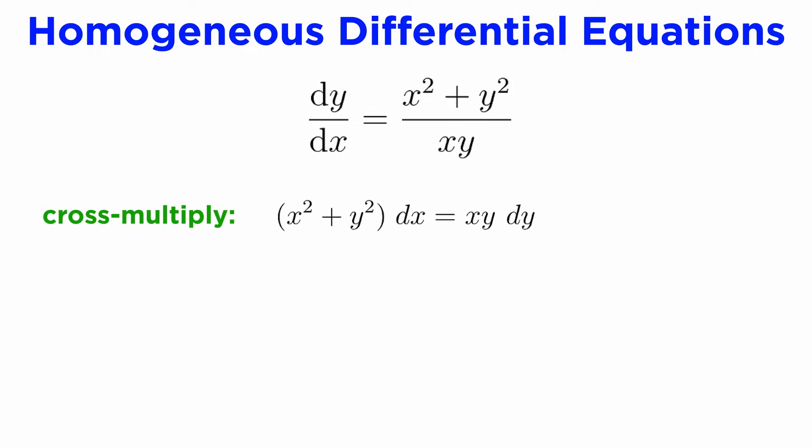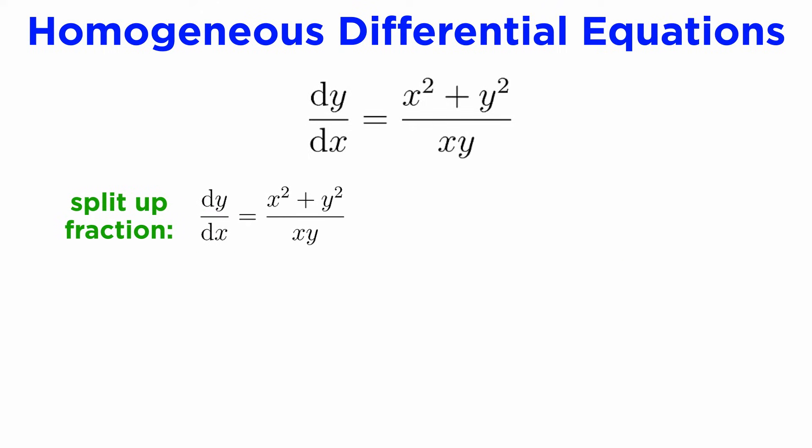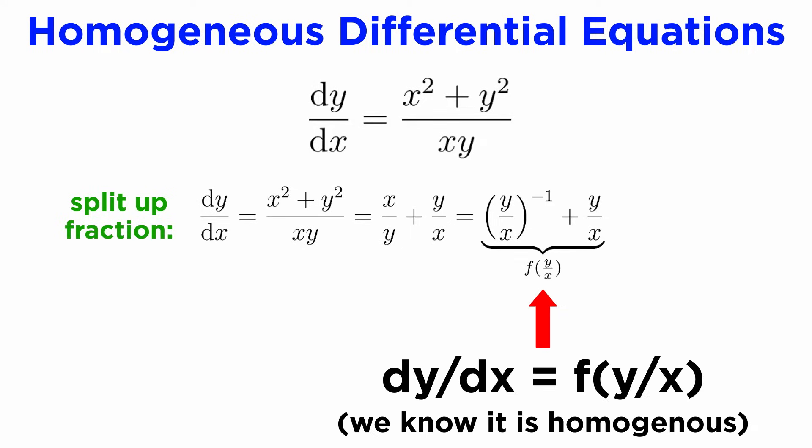Firstly, if we cross multiply everything out, we can identify the two functions x squared plus y squared and x times y, and it's easy to show that these are both second order homogeneous functions, so our definition of a homogeneous differential equation is met. Alternatively, if we start from our original DE and just do a little algebra, we notice that we end up with an expression that's purely in terms of the fraction y over x. This is the telltale sign of a homogeneous DE.